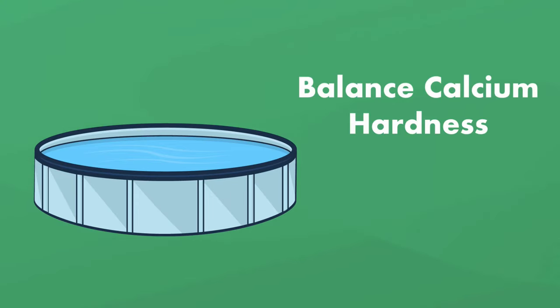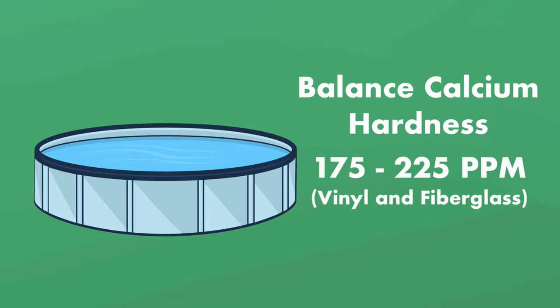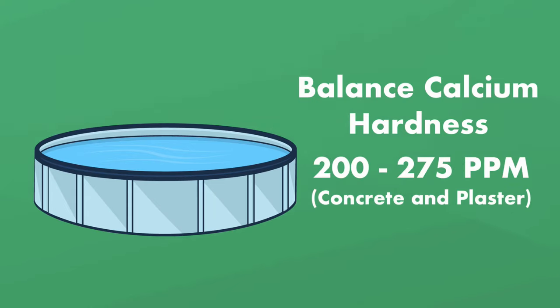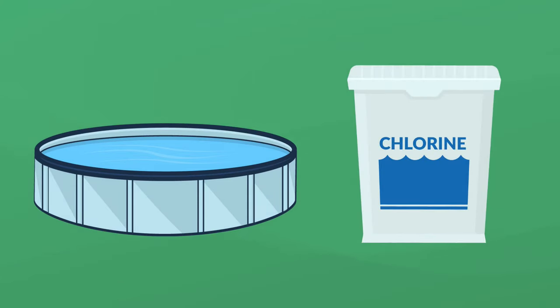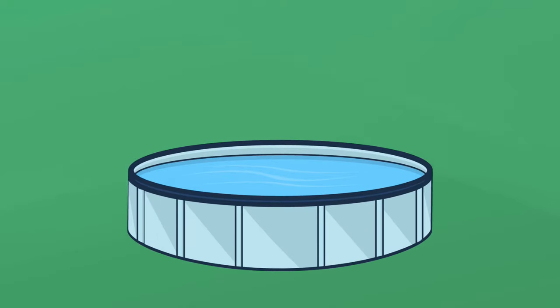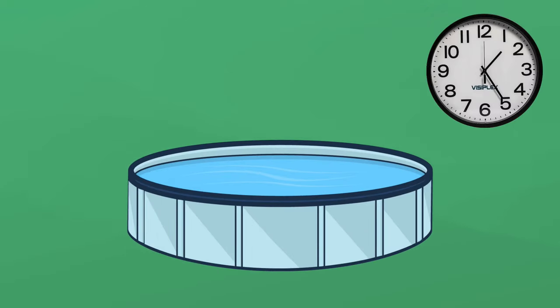Next, balance the calcium hardness level. It should be between 175 and 225 parts per million for a vinyl and fiberglass pool, and between 200 and 275 parts per million for concrete and plaster pools. Finally, balance the sanitizer level based on whatever sanitizer you use according to the manufacturer's directions. Once the water is balanced, wait a few hours to see whether the pool foam dissipates.